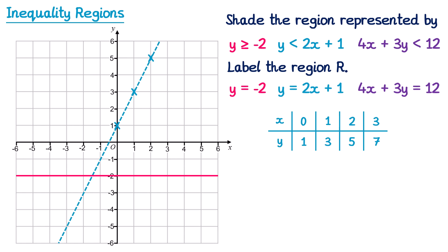For the final line, 4x + 3y = 12, we substitute x = 0 to get 3y = 12, so y = 4, giving the point (0, 4). Then substituting y = 0 gives 4x = 12, so x = 3, giving the point (3, 0). We plot (0, 4) and (3, 0) and draw a straight line between them. Since the inequality was strictly less than, we use a dotted line here too.